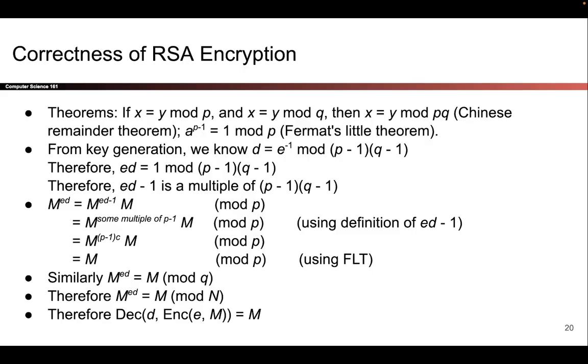Hope you followed it. I take M^ed, I massage it to M mod p, then I do the same massaging mod q, and then use the Chinese remainder theorem to finish up. So that's my outline of how the proof works.